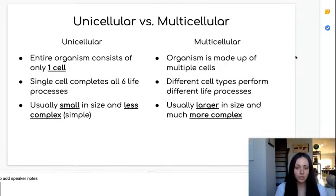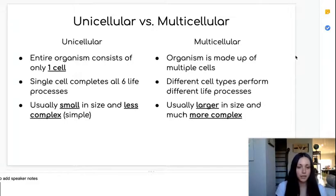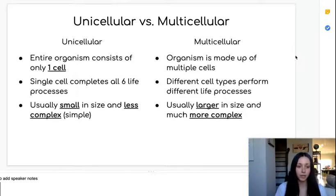As we go through the lesson we're going to look at some examples, but you can think about bacteria as an example. Bacteria can be very dangerous to us, but it's very very small — actually microscopic, we can't see it with our eyes — and it's much less complex than perhaps a human or an animal.